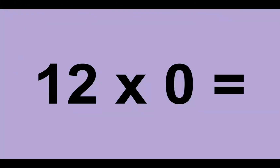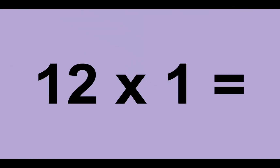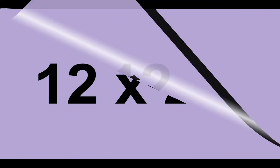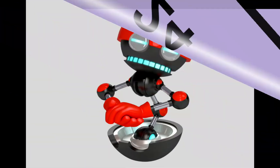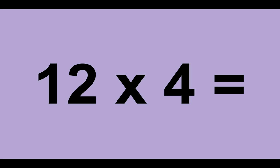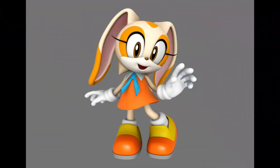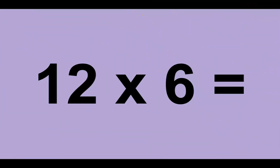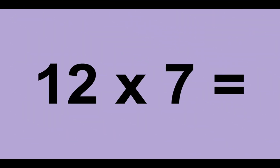Twelve times zero equals zero. Twelve times one equals twelve. Twelve times two equals twenty-four. Twelve times three equals thirty-six. Twelve times four equals forty-eight. Twelve times five equals sixty. Twelve times six equals seventy-two. Twelve times seven equals eighty-four.